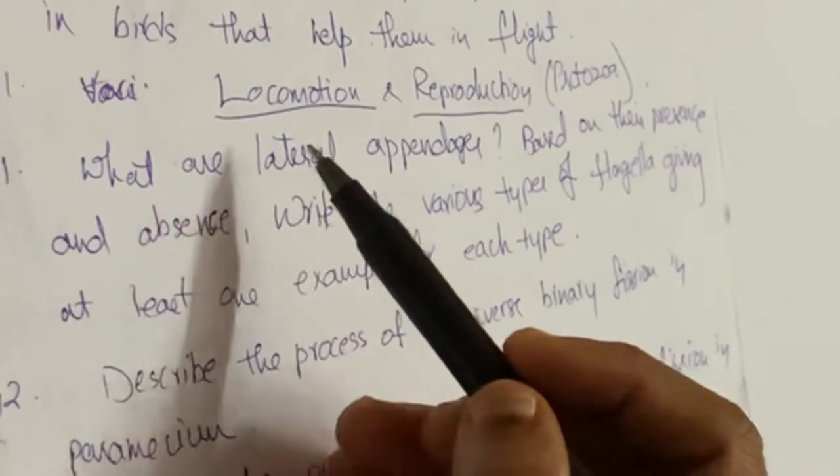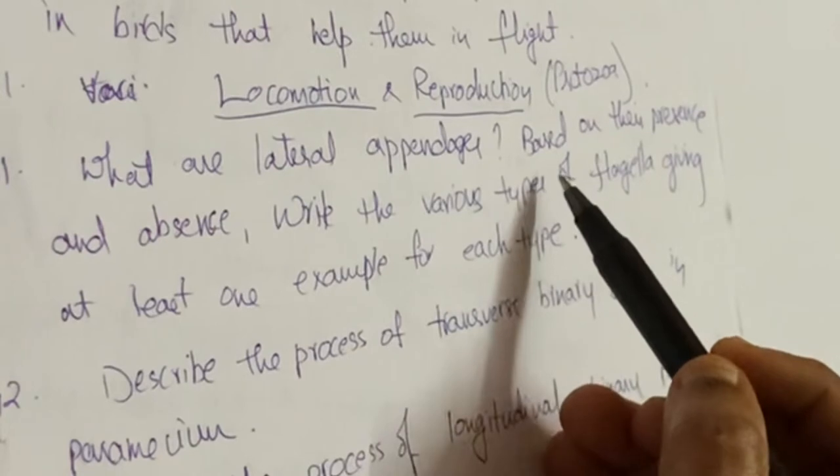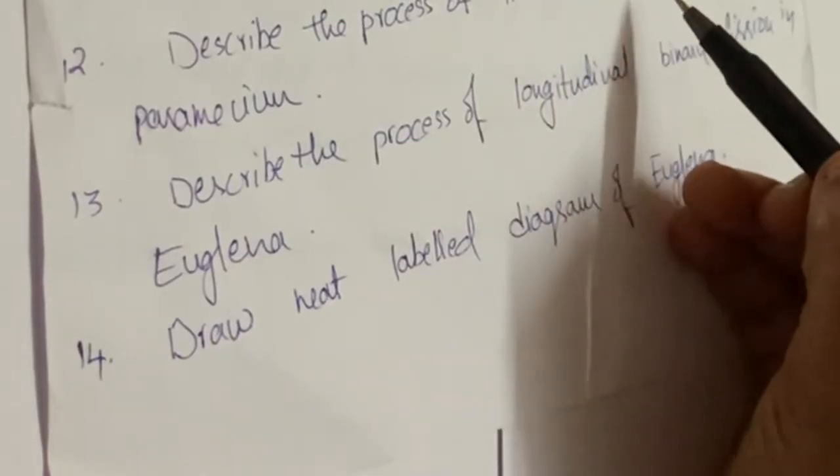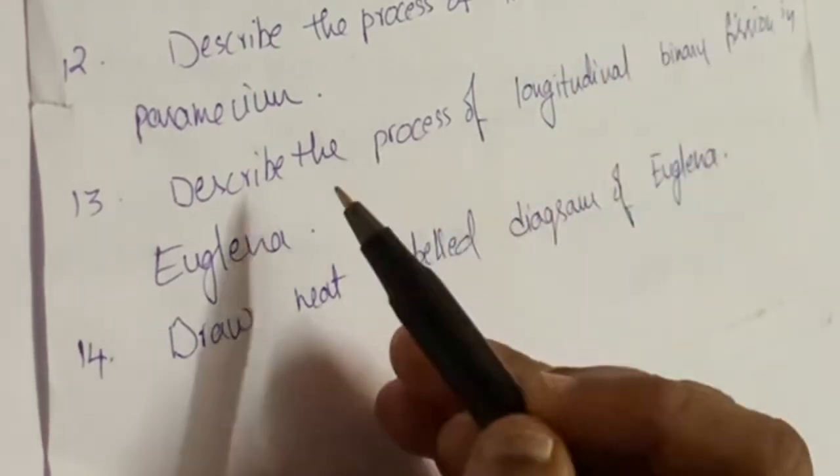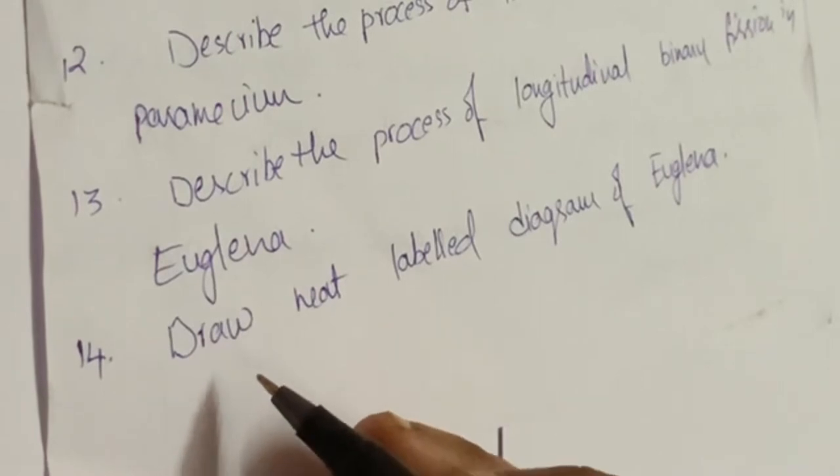The expected one for the advanced supplementary is: what are the lateral appendages and various types of flagella? Next, describe the process of transverse binary fission of Paramecium and longitudinal binary fission of Euglena. Prepare well to draw the neat labeled diagram of Euglena, which is very important.